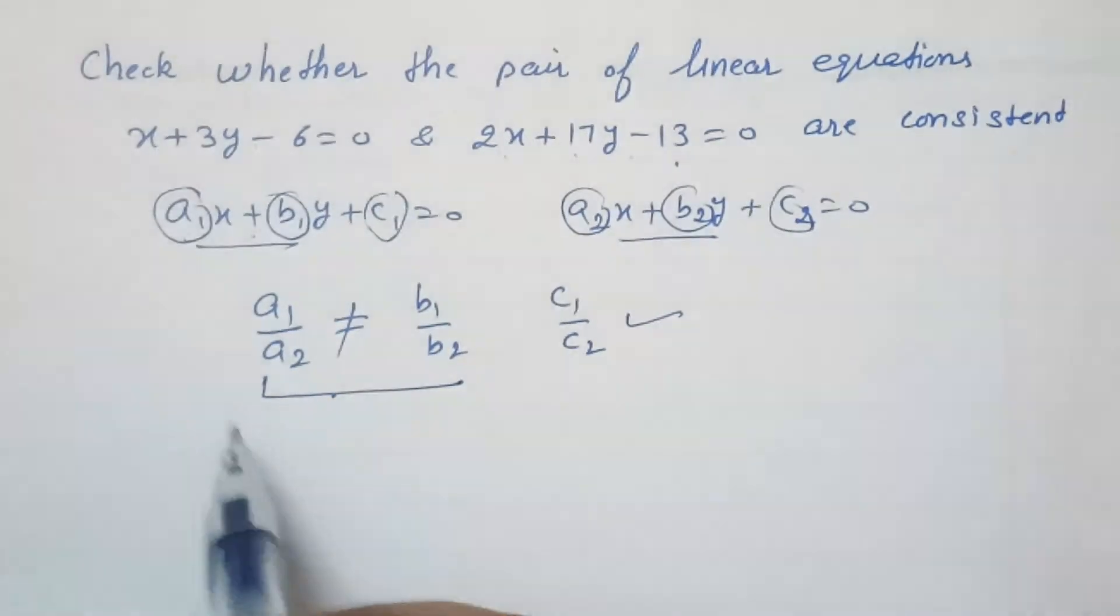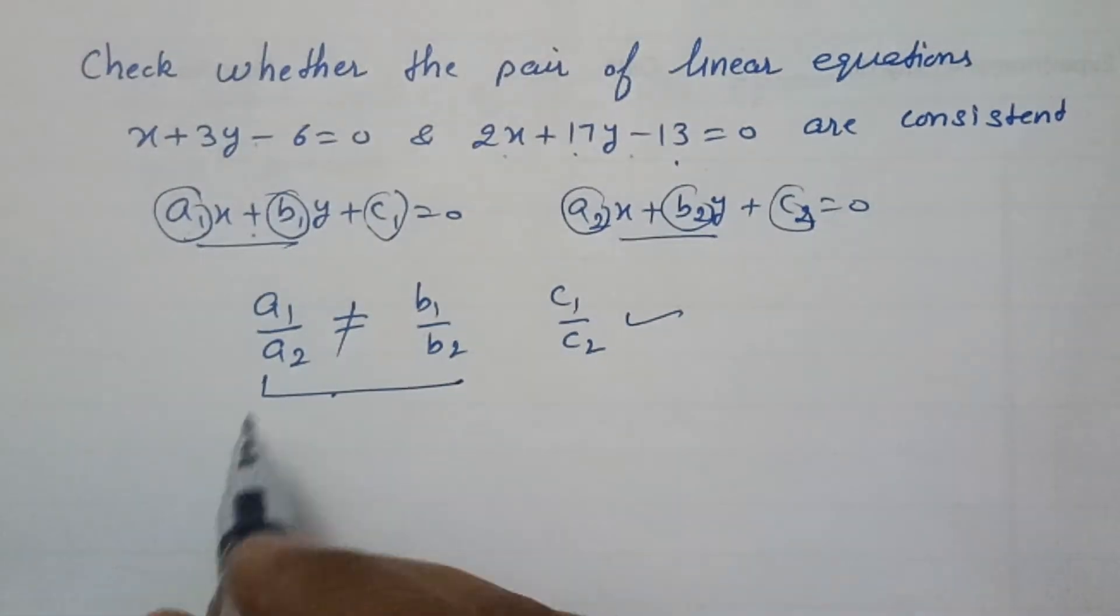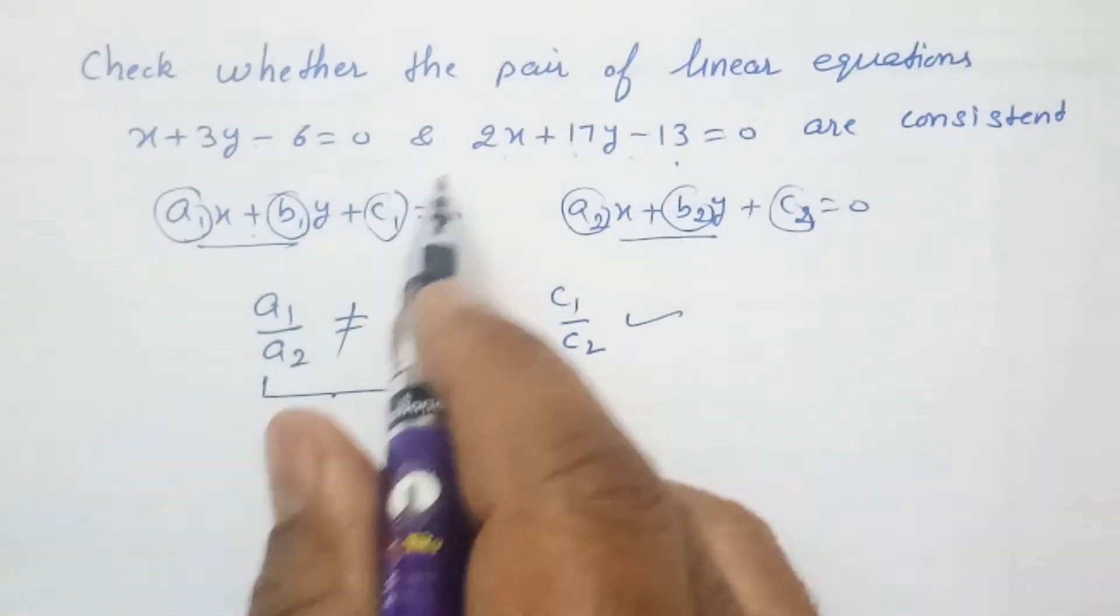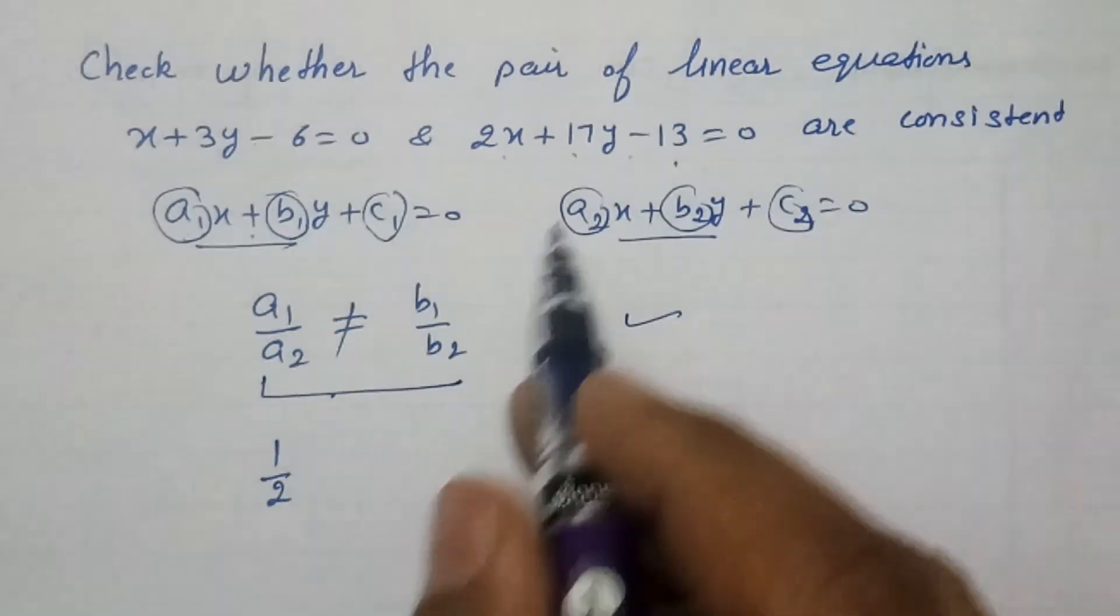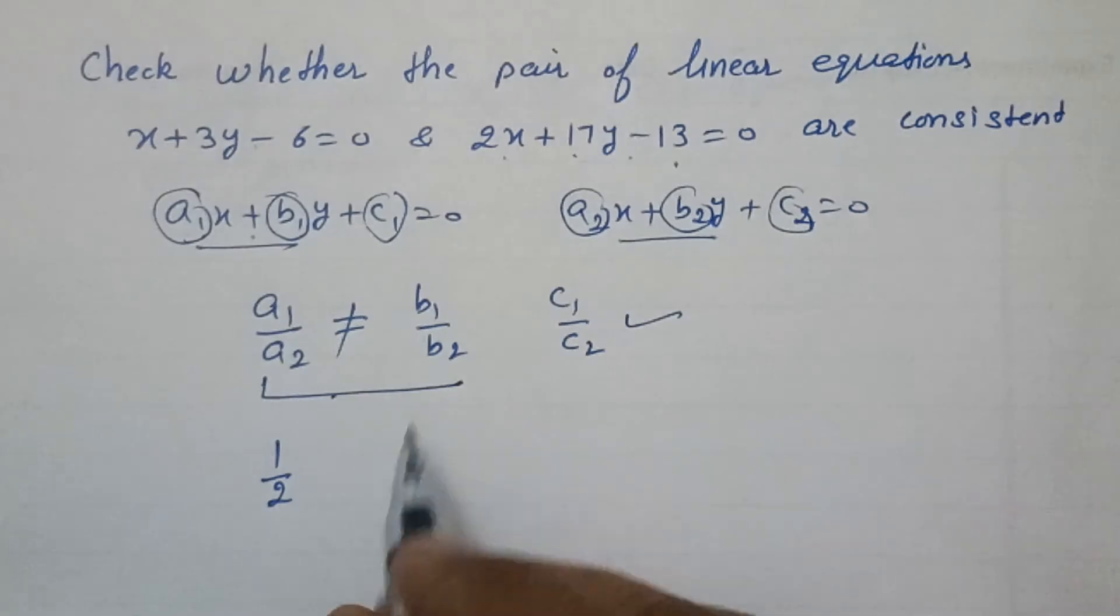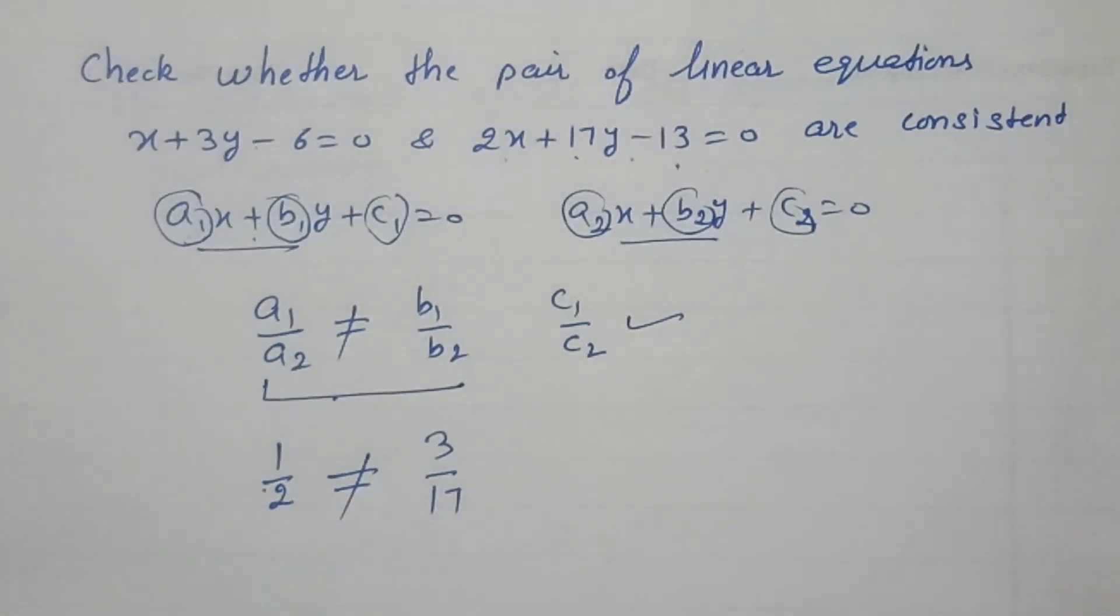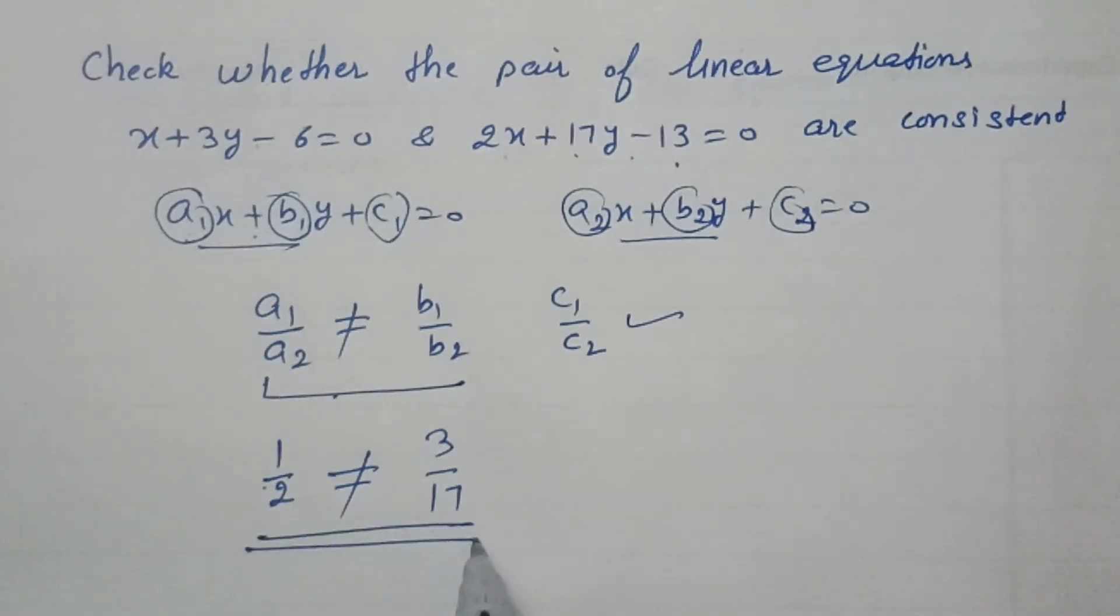So, here if we compare: a1, the coefficient of x, is 1, and a2 is 2. Second, b1 is 3 and b2 is 17. We know that both ratios are not equal, so these lines are consistent and they have a unique solution.